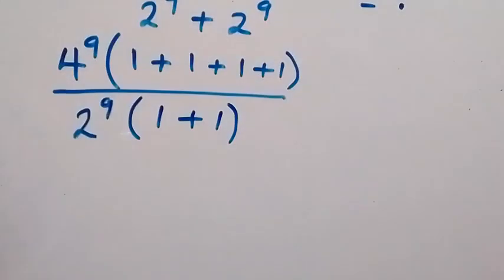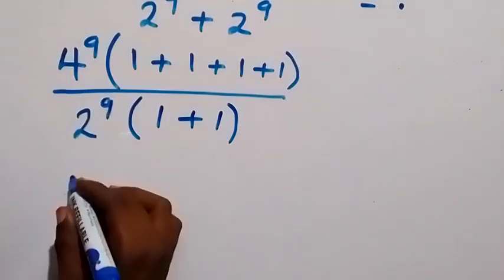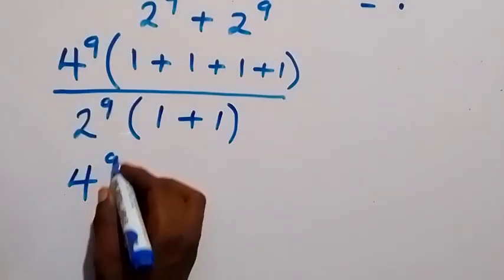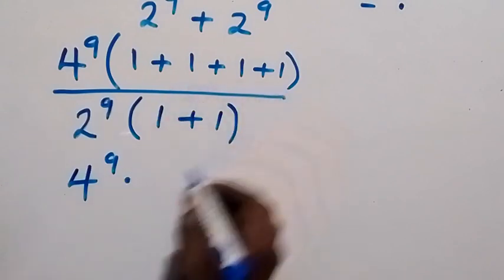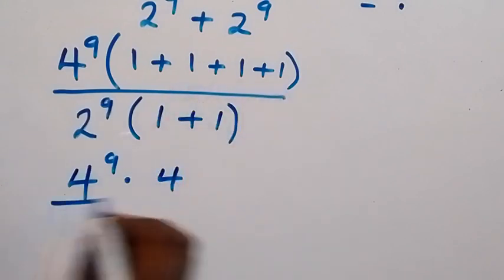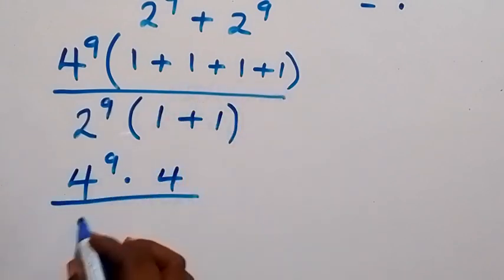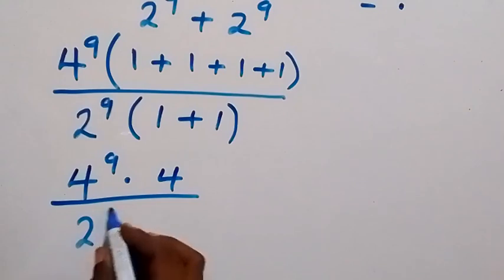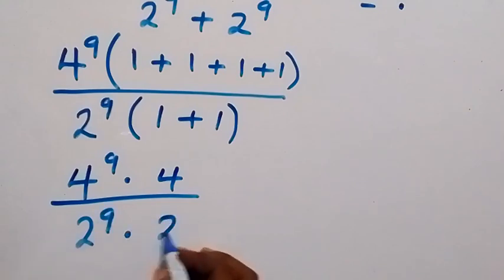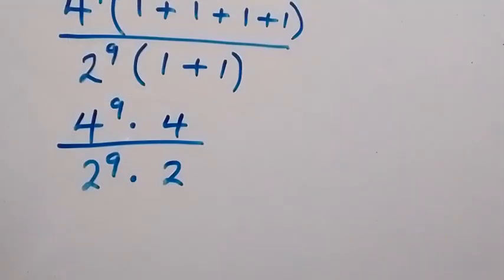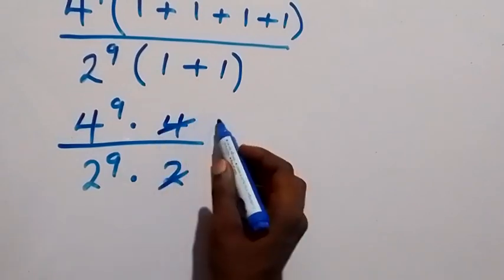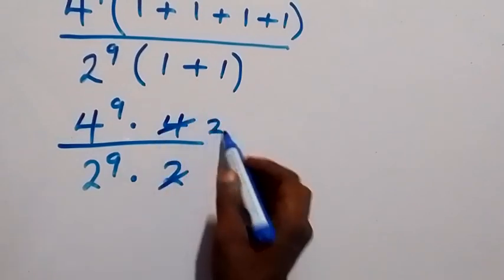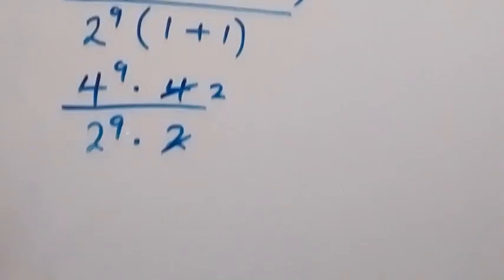From here this can be written as 4 raised to power 9 multiplied by 4, then divided by 2 raised to power 9 multiplied by 2. Then the 2s simplify — 2 goes here and 2 goes here, giving us 2.